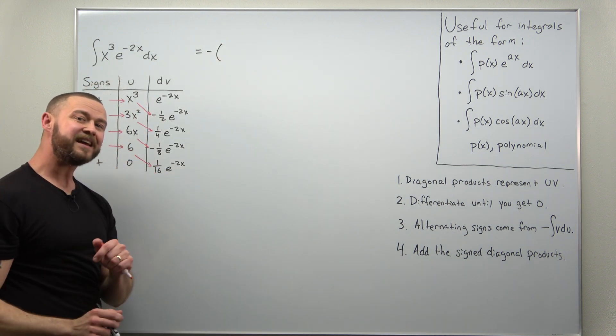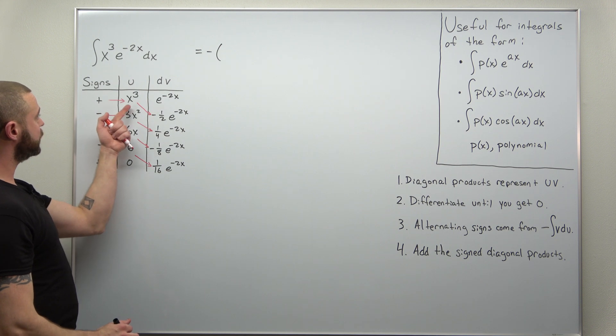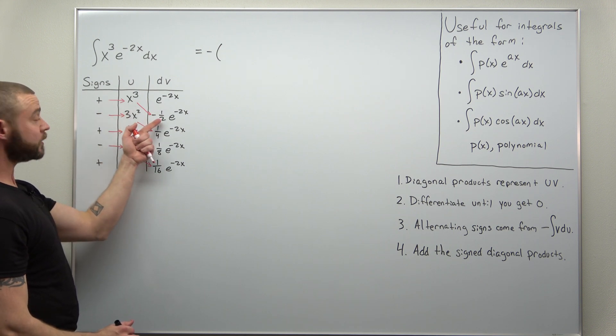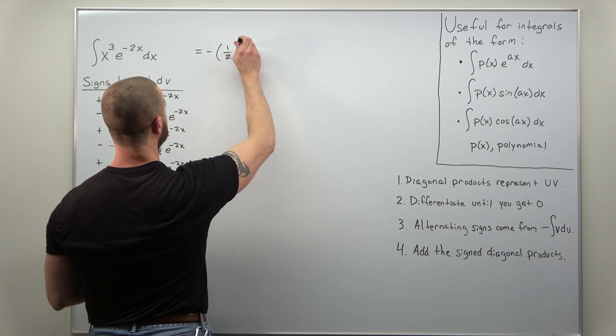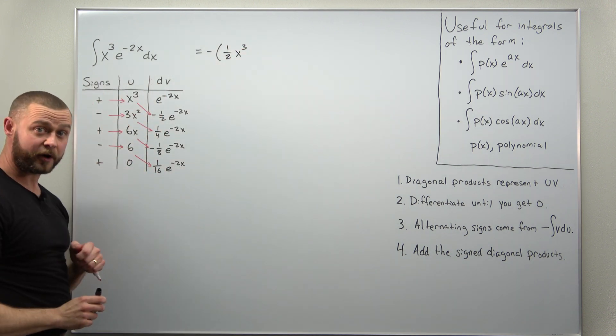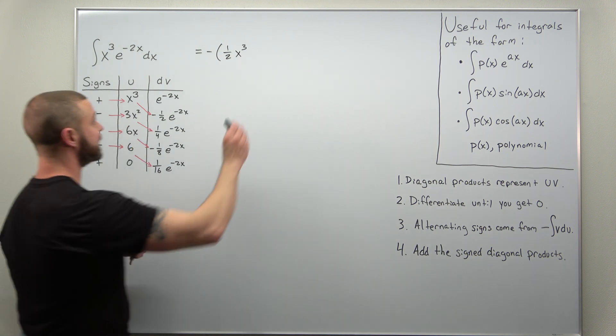I'm going to put the e to negative 2x factor at the end. And it looks like what we're going to have is 1 half times x cubed. Again, we already factored out the negative in front. Looks like the next one we're going to get 3 fourths times x squared.